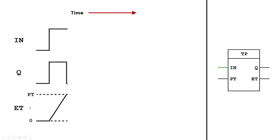The elapsed time also starts counting as soon as I turn on the input. When the elapsed time has reached the preset time — which is the length of our pulse — the output will be deactivated again. So what we've generated through the output is a pulse of a certain length.